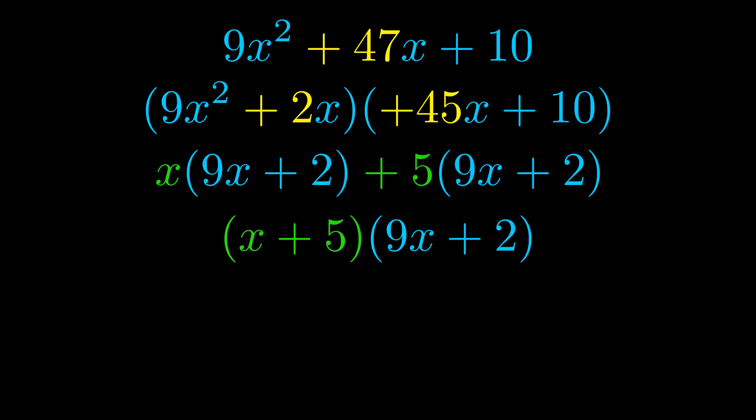The blue values are the same. Those blue values will become one of our factors and we will combine the two green values, the GCFs that we pulled out, to get the other one. And that is our fully factored equation.